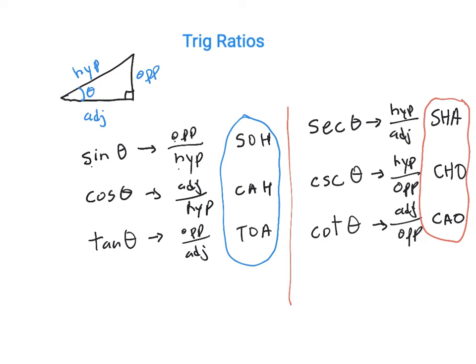So we have SOH-CAH-TOA for the original three trig ratios. And now we have SHA-CHO-CAO. And I'm stretching it here. C-A-O, I'm saying CAO. That's just going to help me remember how to set up the fractions. On the next slide, I've got a nice little table that has a summary of what we've talked about here. And if you want to take a screenshot of that or write in your notes, that's probably not a bad idea.